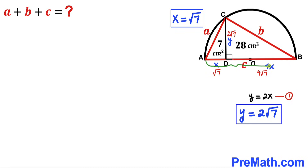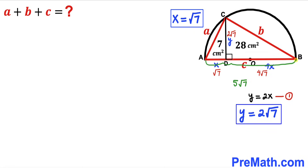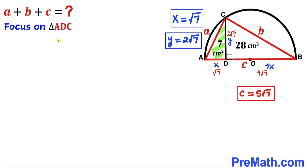The whole diameter AB is the sum of AD and BD: √7 + 4√7 = 5√7. Since diameter AB is represented by lowercase c, our value of c is 5√7.